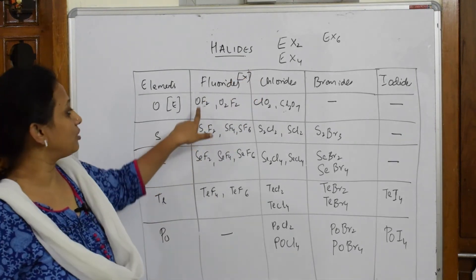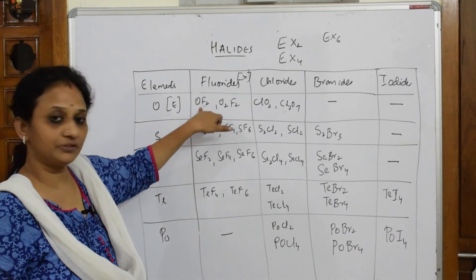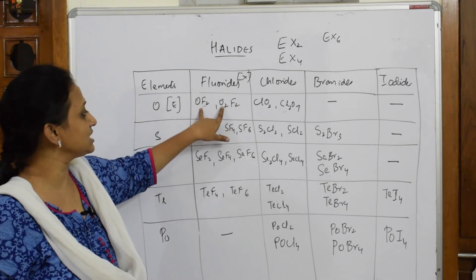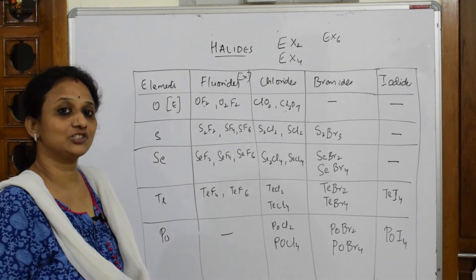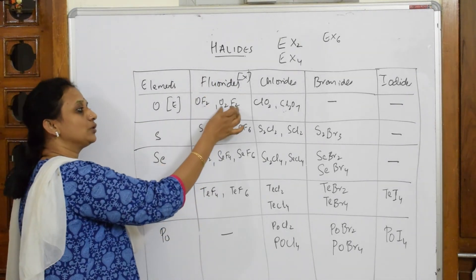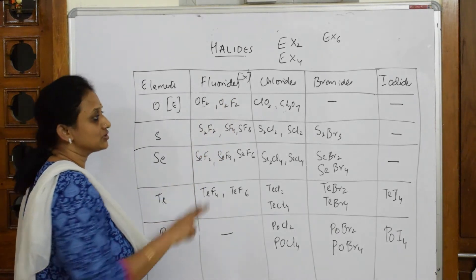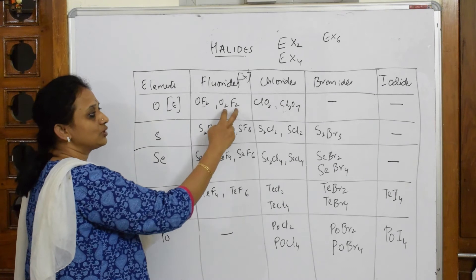Now fluorides are going to form of type EFX2, I said, so OF2. Then further if I go, it can also form interhalogen compounds. But here basically OF2 and O2F2, this is not interhalogen please mind. Interhalogen is combination of two halogens. So this is one type, OF2 and O2F2.